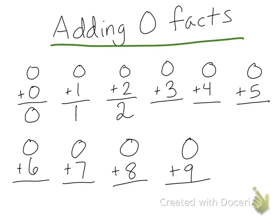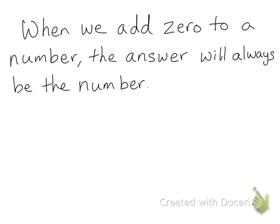So zero plus three is three, zero plus four is four, zero plus five is five, zero plus six is six, zero plus seven is seven, zero plus eight is eight, and zero plus nine is nine. So when we add zero to a number, the answer will always be the number.